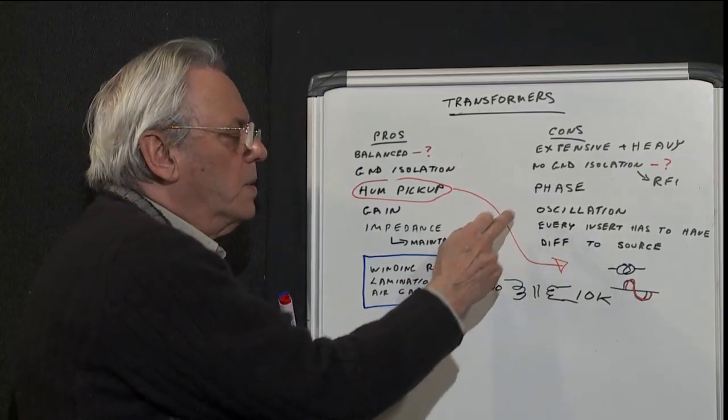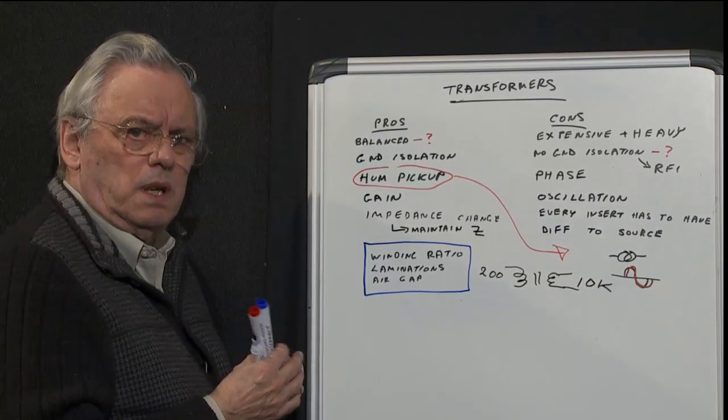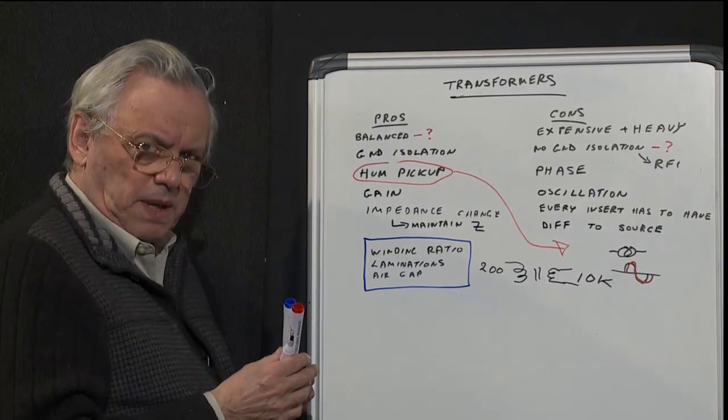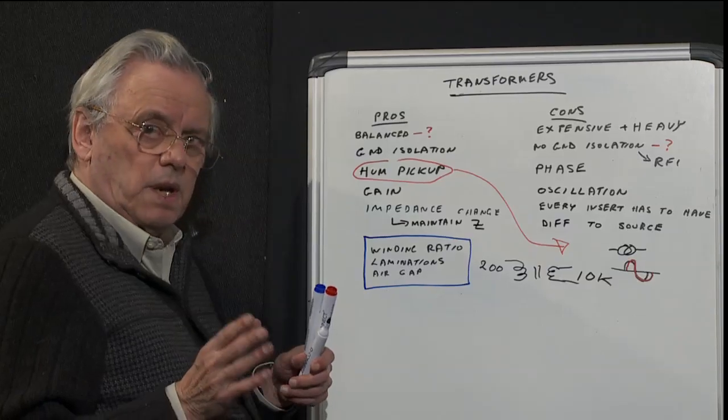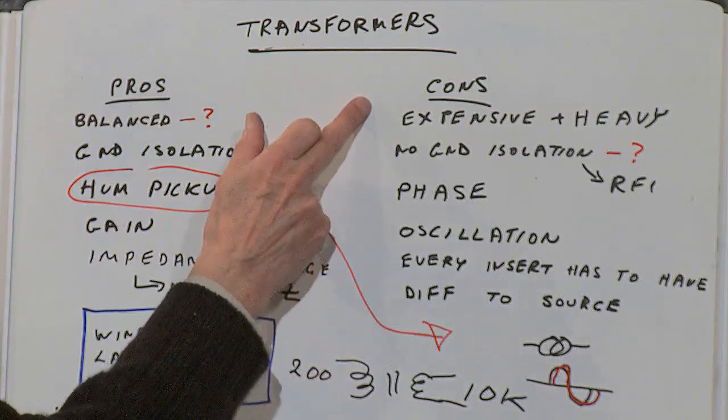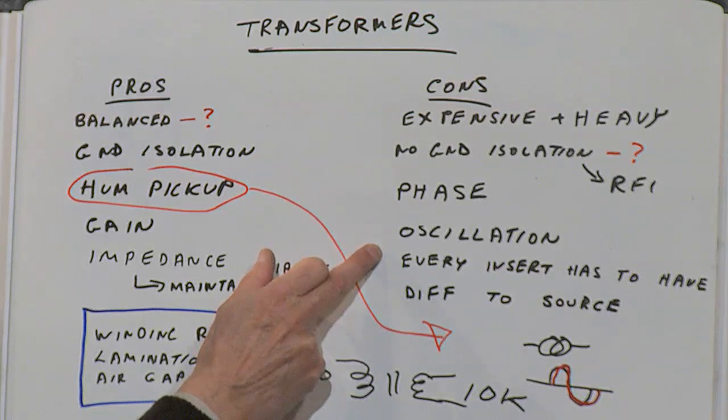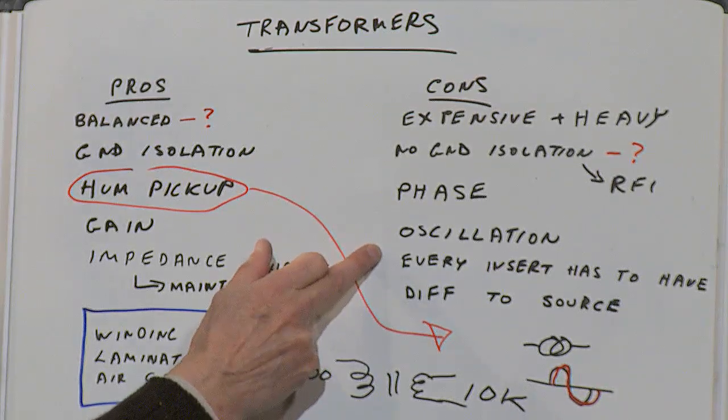If you're not careful, you can have an output transformer oscillate, particularly when you're using feedback. Again, there's another whole little talk about feedback coming.